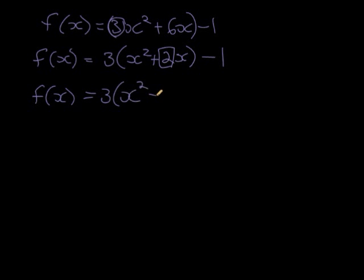In other words, half of 2 is 1. We're going to add half of this coefficient, 1, squared. So whatever the half of that coefficient is, we're going to square it, and that's what we're going to add.